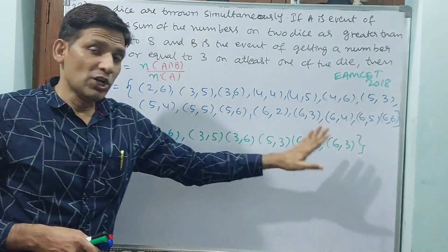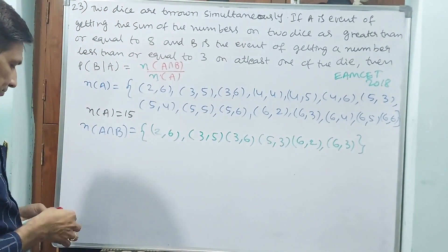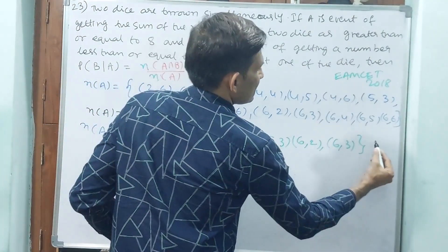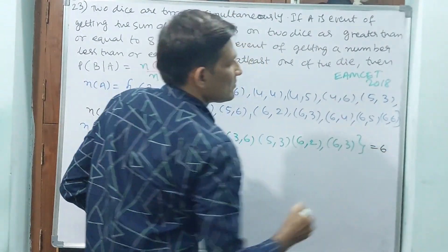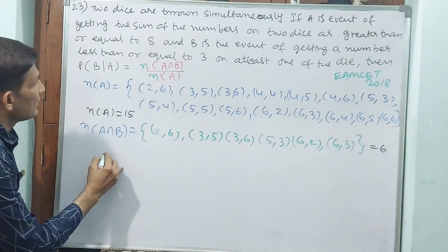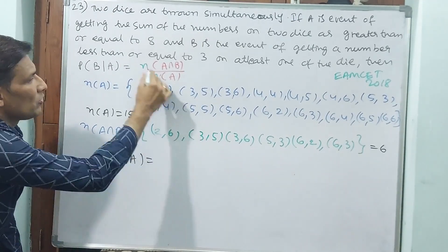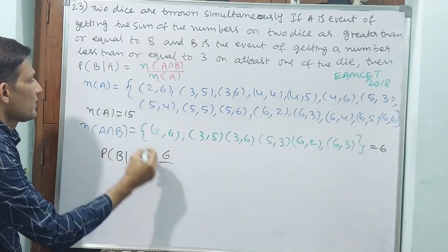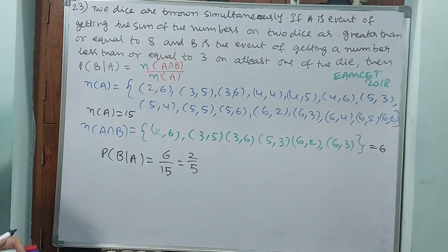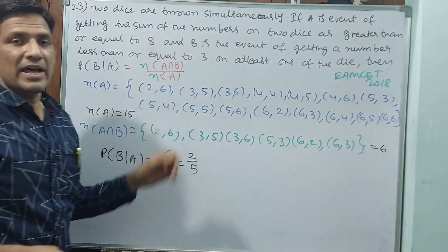So N of A intersection B equals 6. Therefore P of B bar given A equals 6 by 15. Simplifying: 3 twos and 3 fives gives 2 by 5. So 2 by 5 is the answer.